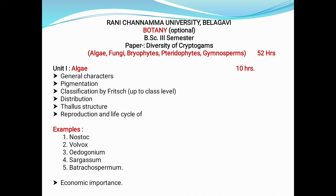Now you can tell me what are cryptogams — these are the plants that are not able to produce flowers or seeds. Such plants are placed under cryptogams. We will study them one by one: algae, fungi, bryophytes, pteridophytes and gymnosperms. The total allotted period is 52 hours.